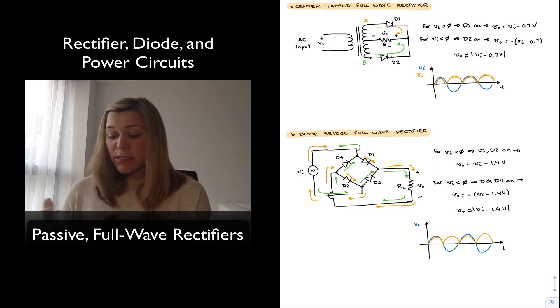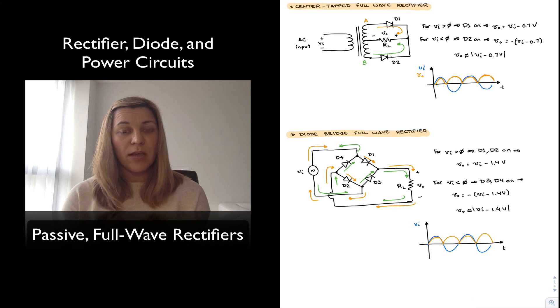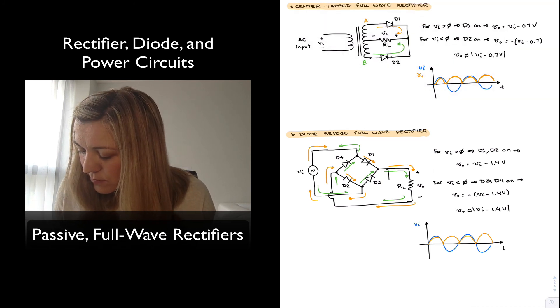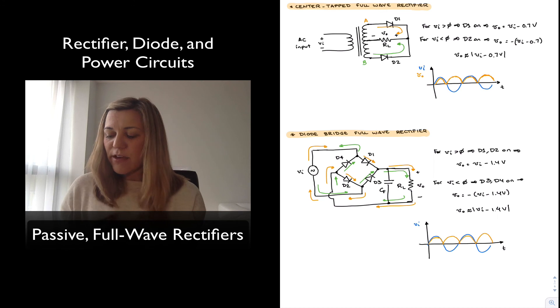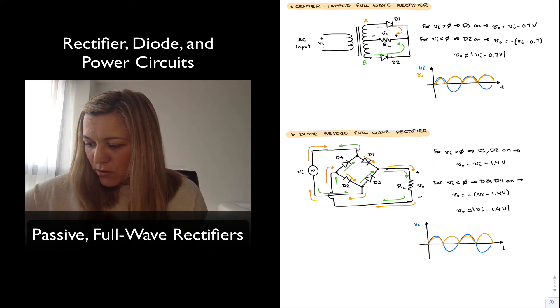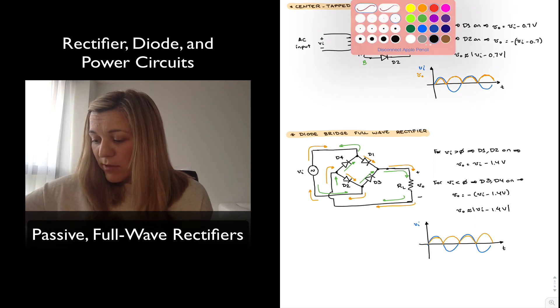One more thing to mention is that since full wave rectifiers are typically used in applications involving the generation of DC signals, such as a DC power supply, oftentimes the full wave rectification is the first step in the generation of a DC signal. And then the second step will be filtering that waveform, adding a filtering capacitor which I will add here. So you will add a capacitor in parallel with that resistor. I'm going to call it Cf for filtering capacitor.